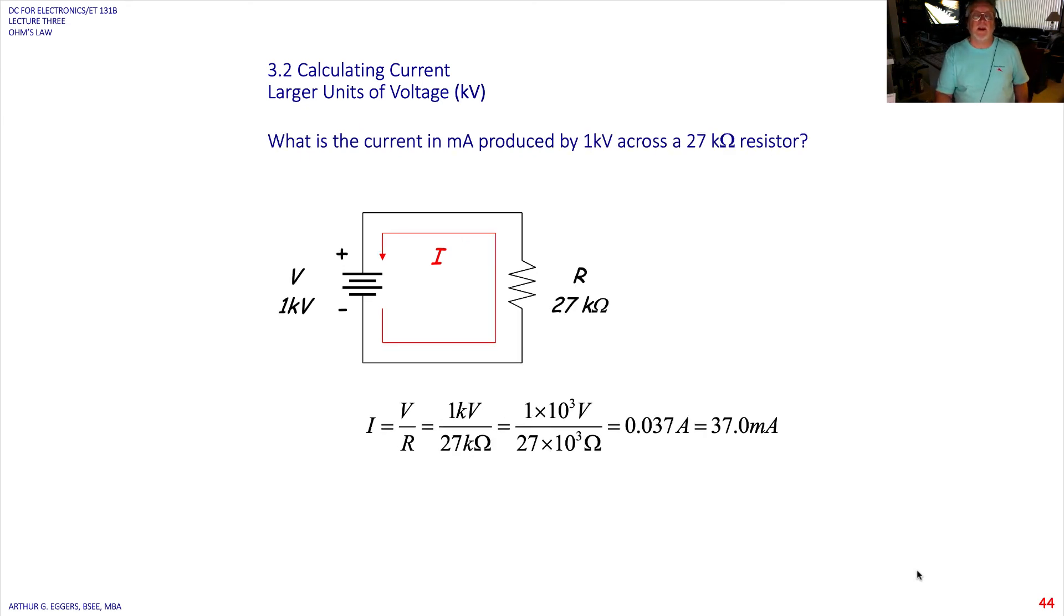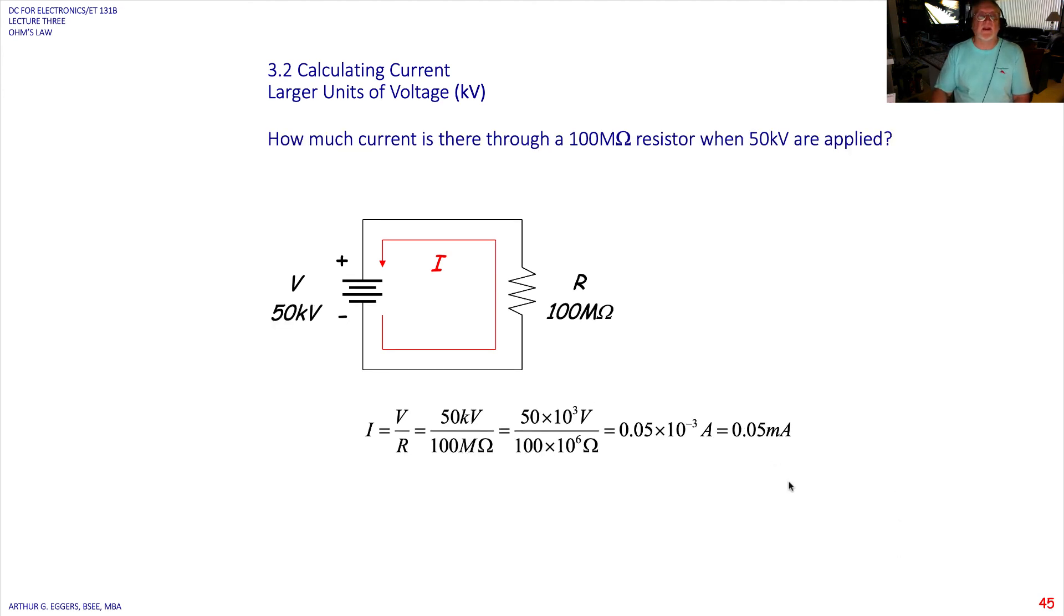So I'm not going to continue to walk through these. What you need to do is, as you're looking at these slides, stop the video and work it out yourself. K, K, 10 to the third, 10 to the third cancels. 127 is equal to 37 milliamps.